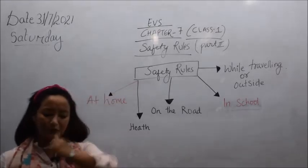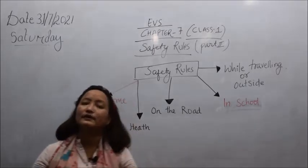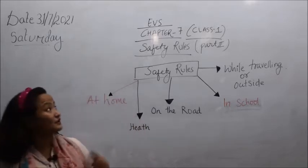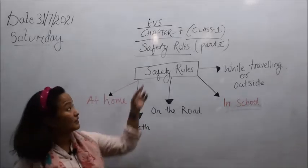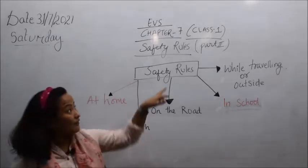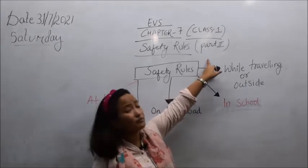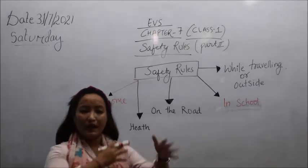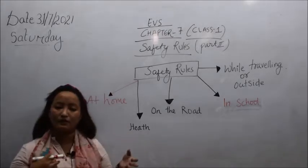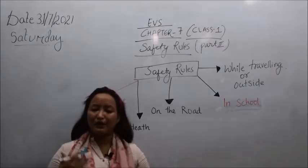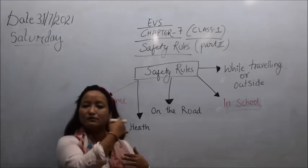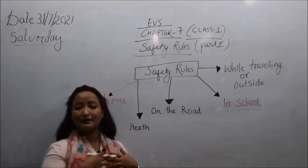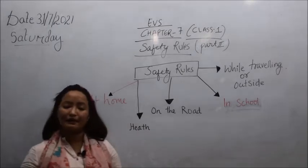In the previous class we discussed about different traffic signs. The chapter name is 'Safety Rules' — I've written 'Part Two' in brackets because I divided the chapter into two parts. So let me just revise — what do you mean by safety? I just want to check your understanding of what I told you earlier.